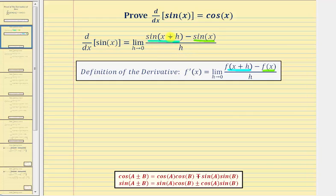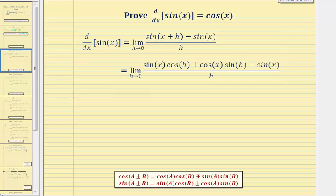Now we want to expand sine of the quantity x plus h using the sum identity for sine, shown here below for reference, where sine of a plus b equals sine a times cosine b plus cosine a times sine b. In our case, a equals x and b equals h. So when we expand sine of the quantity x plus h, we end up with sine x times cosine h plus cosine x times sine h.